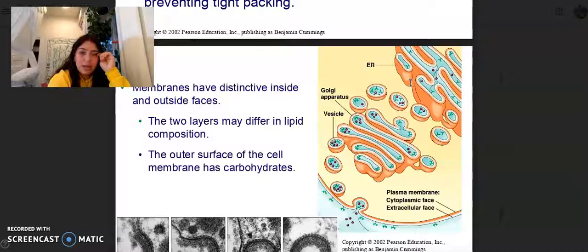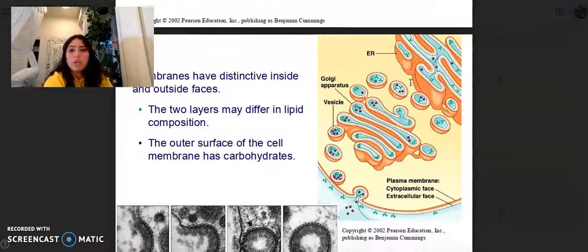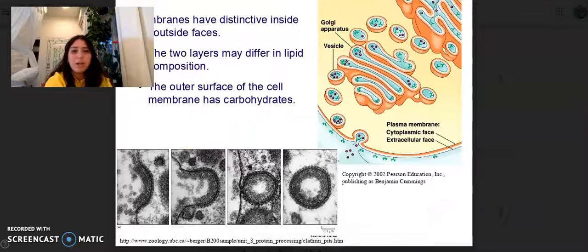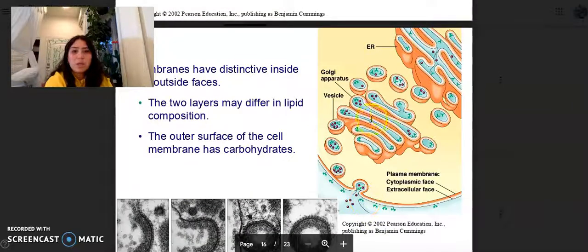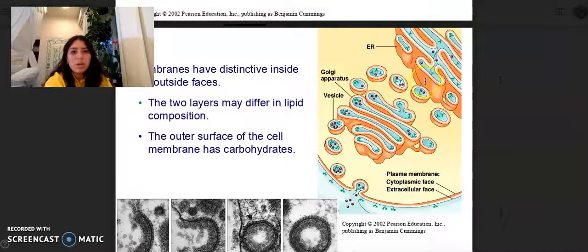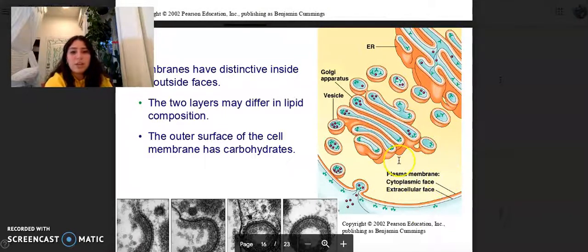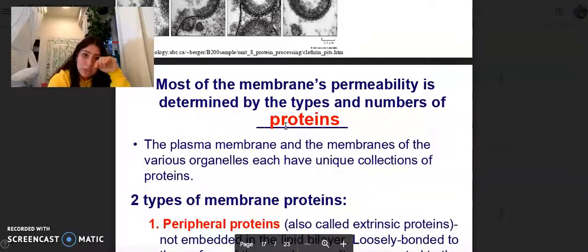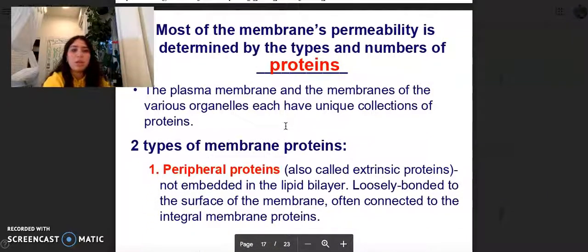Membranes have distinctive outside and inside faces. The two layers may differ in lipid composition. The outer layer of the cell membrane has carbohydrates. Here's the Golgi apparatus, this is a vesicle, here's the rough ER. Or is that the smooth ER? I think it's the smooth ER because there's not a bunch of thingies. And then here's the plasma membrane, cytoplasmic face, extracellular face, and then here's an image of what's happening. Most of the membrane's permeability is determined by the types and numbers of proteins. The plasma membrane and membranes of the various organelles each have unique collections of proteins.